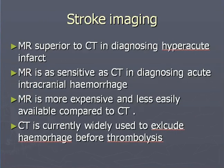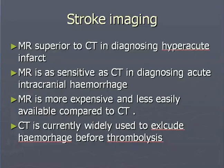Stroke imaging. MR is superior to CT in diagnosing hyperacute infarct. MR is as sensitive as CT in diagnosing acute intracranial hemorrhage. MR is more expensive and less easily available as compared to CT. CT is currently widely used to exclude hemorrhage before thrombolysis. This is the key difference between MR and CT as far as stroke imaging is concerned.